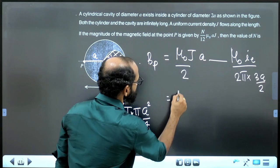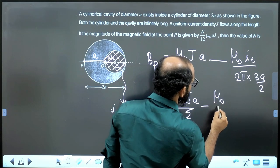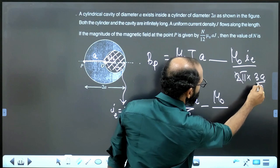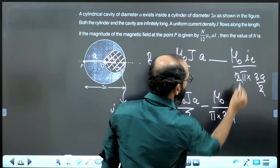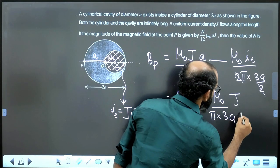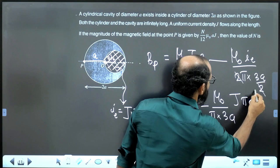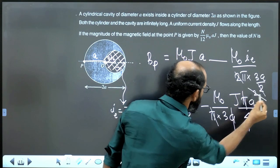Then, let us substitute mu0JA by 2 minus mu0 by 2 gets cancelled, pi multiplied by 3A. I enclosed, we can substitute, J pi A square by 4. J pi A square divided by 4, pi gets cancelled, 1A also goes.